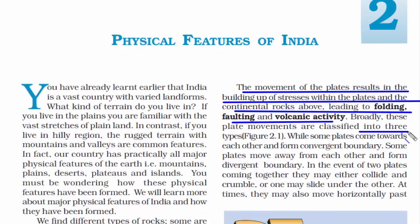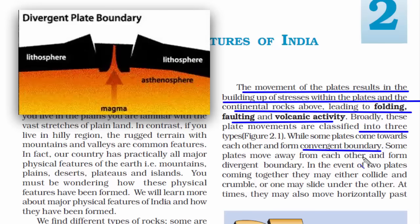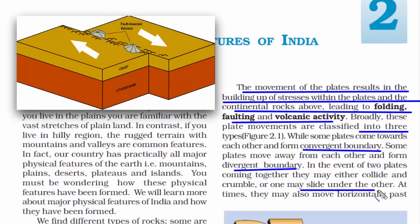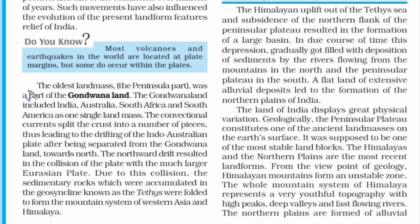These plate movements are classified into three types. Some plates come towards each other forming a convergent boundary, some move away forming a divergent boundary, and at times they may move horizontally past each other. The movement of these plates has changed the position and size of continents over millions of years. The land of India displays great physical variation, and the peninsular plateau is one of the ancient landmasses on the earth's surface.